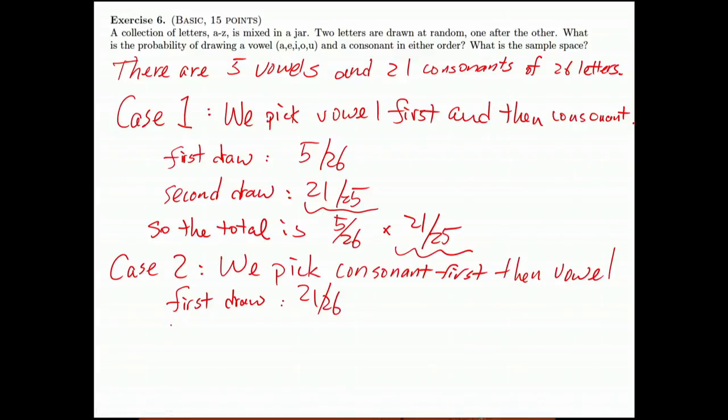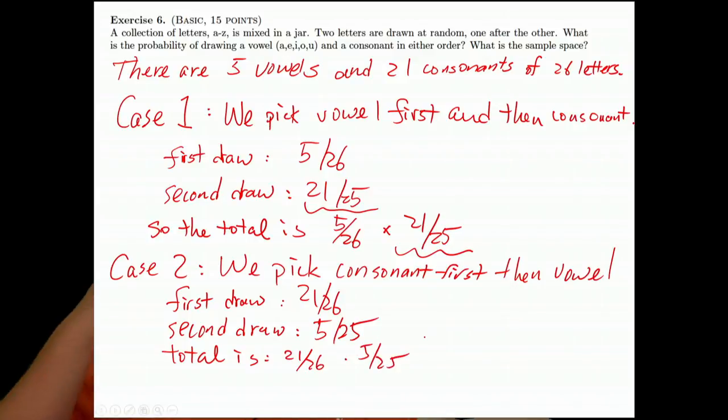The second draw is 5 over 25. So the total is 21 over 26 times 5 divided by 25.